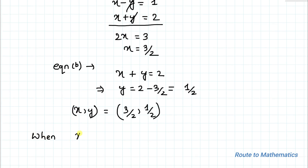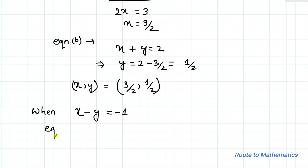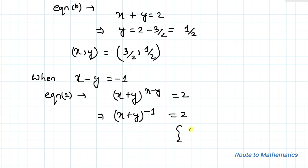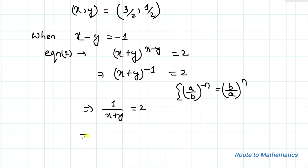For Case 2, when x minus y equals minus 1, from equation 2 we have (x plus y) to the power (minus 1) equals 2. Using the exponential rule that (a/b) to the power (minus n) equals (b/a) to the power n, we write 1 by (x plus y) equals 2, and by cross multiplication x plus y equals 1 by 2.